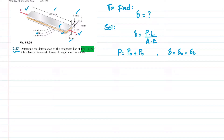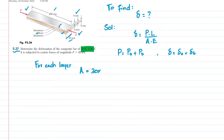We have three layers and all three layers have dimensions 30 × 5 millimeters. So for each layer, the area is 30 × 5 = 150 mm², which is equal to 150 × 10⁻⁶ m².